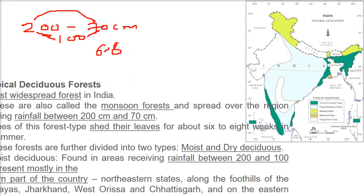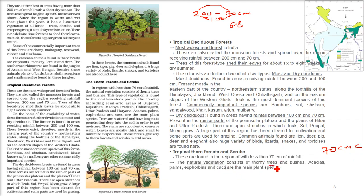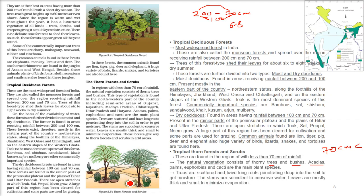Tropical thorn forests are found in the region with less than 70 centimeters of rainfall — areas where the monsoon doesn't fall much, and in the rain shadow area behind the Western Ghats. Natural vegetation consists of thorny trees, bushes, acacias, palms, euphorbias, and cacti. These are scattered with long roots and quite large distances between plants.